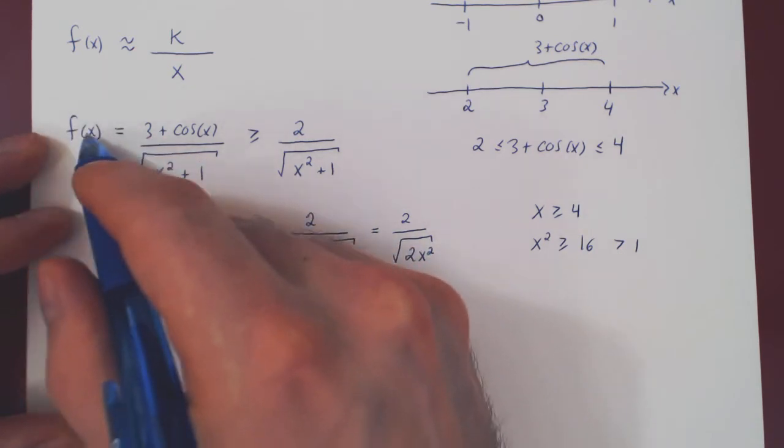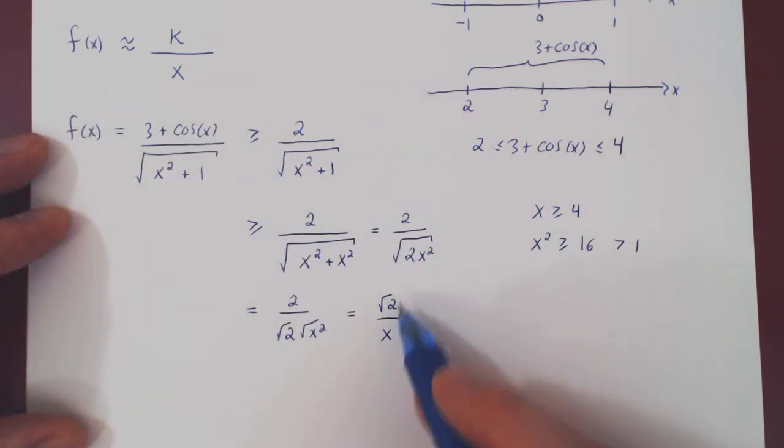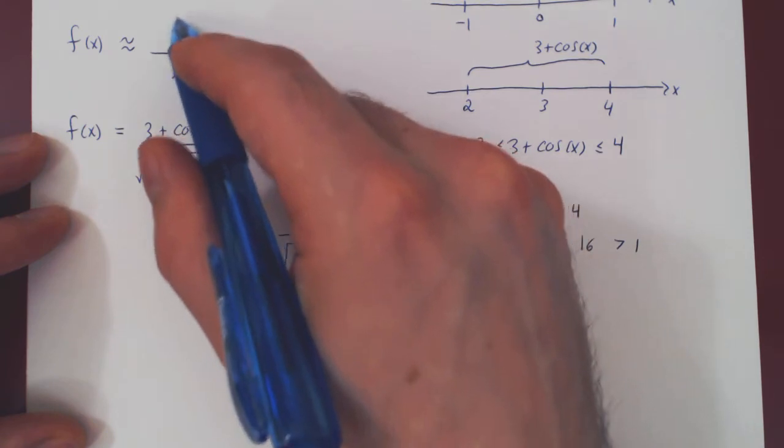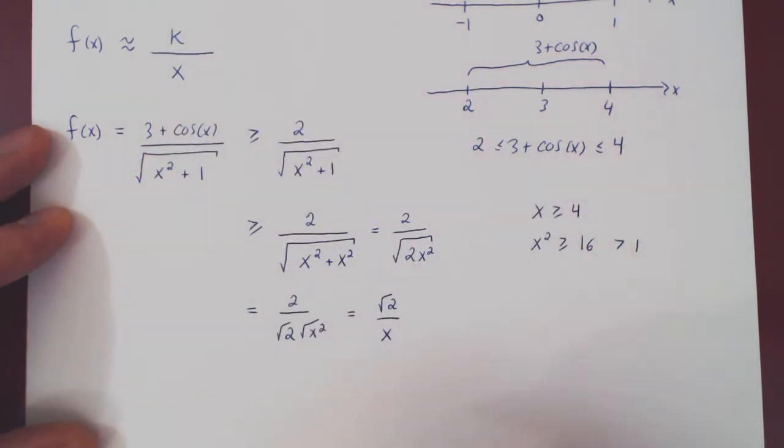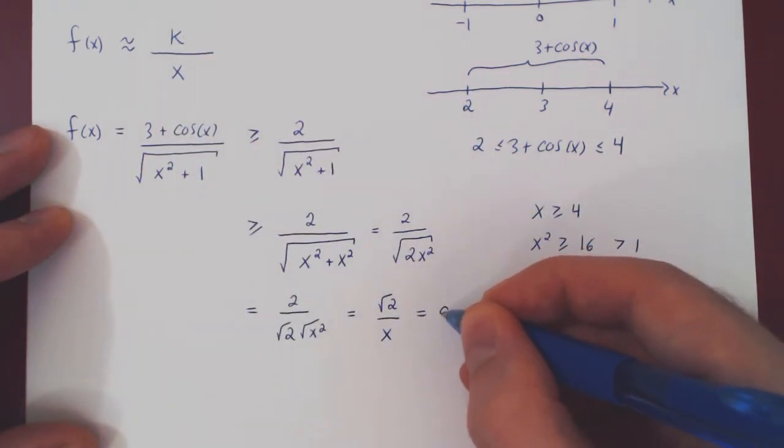And now we have that f(x) is bigger than √2/x, which is what our intuition led us to believe. And this is now our g(x).